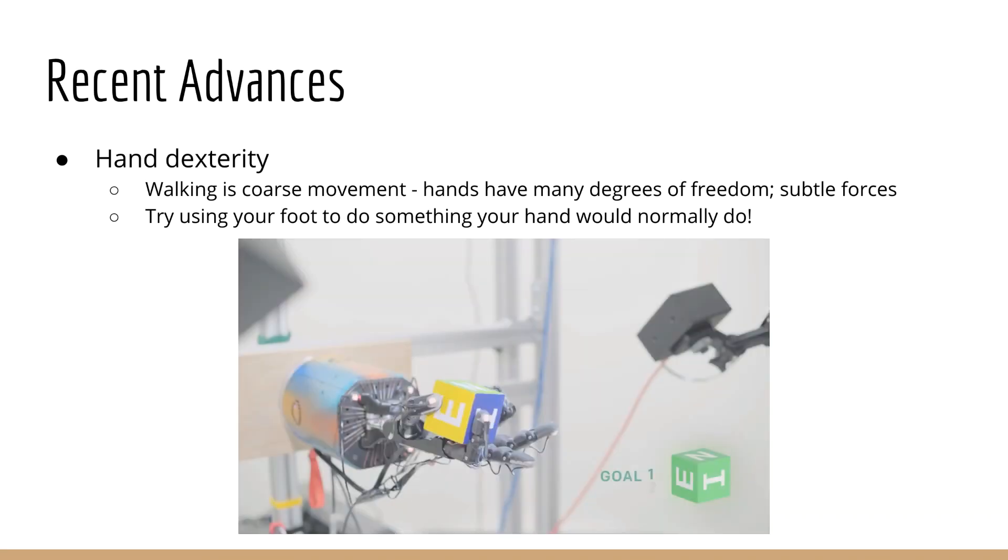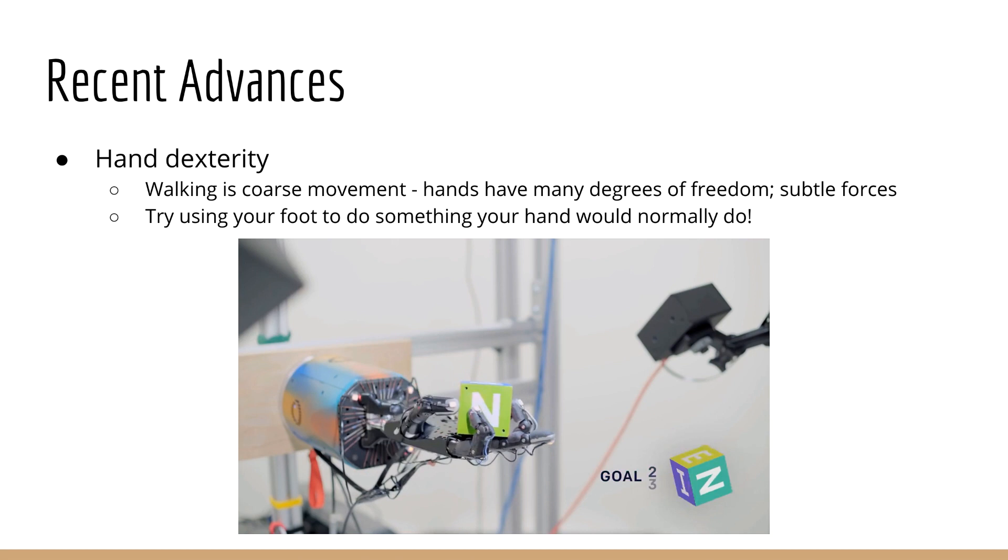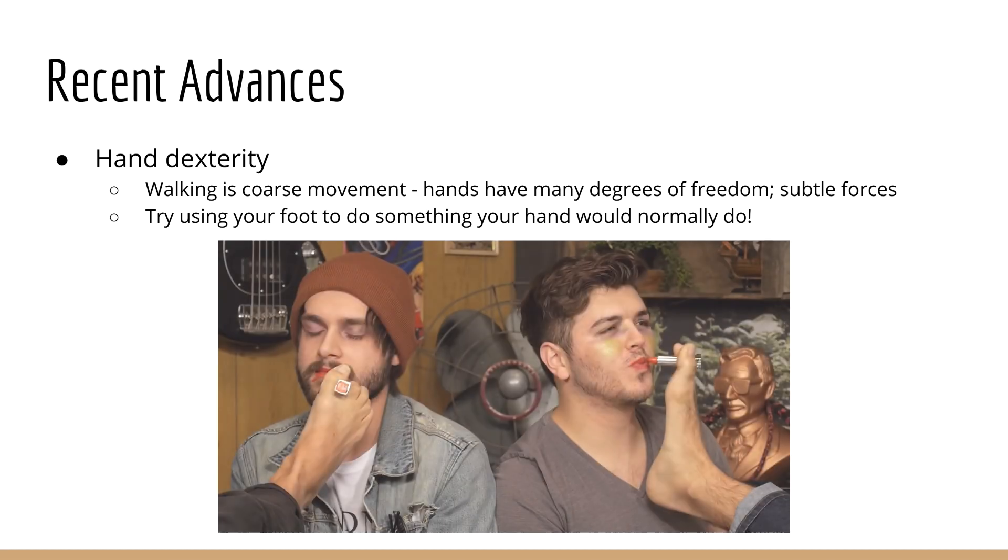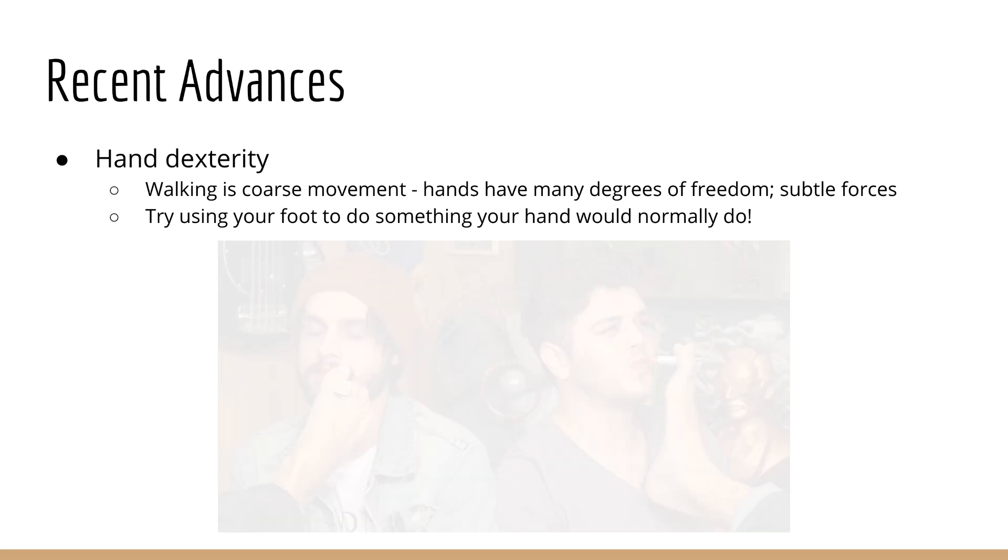We've seen agents learn hand dexterity, which is no small feat. Walking is one thing, but those are coarse movements. Hand dexterity is complex. You have many degrees of freedom, and many of the forces involved are extremely subtle. Imagine using your foot to do something you would usually do with your hand, and you immediately understand why this would be difficult.